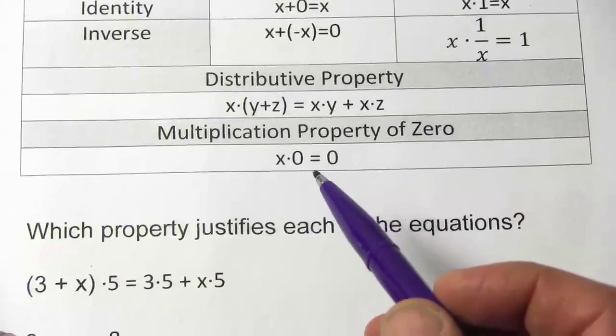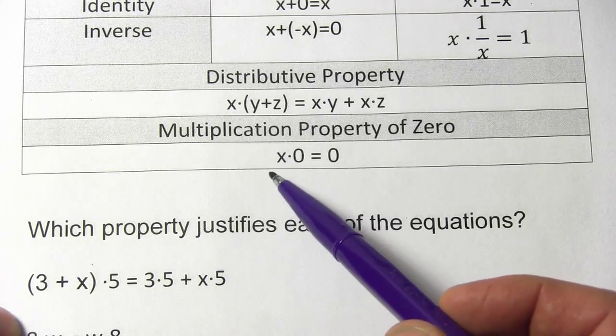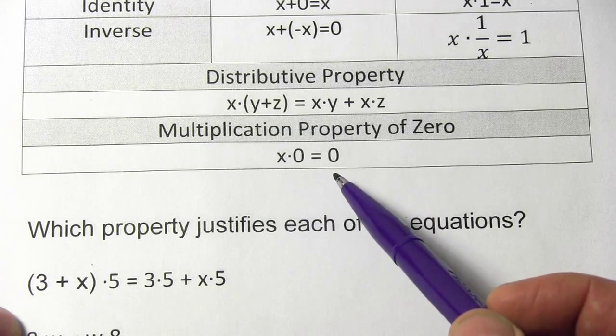And then there's this multiplication property of zero. That just states something you already know too, which is that if you multiply anything by zero, it comes out as zero.